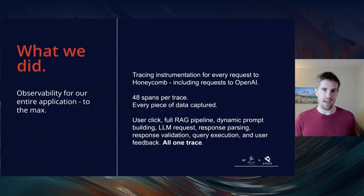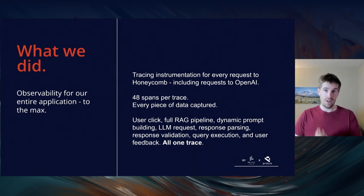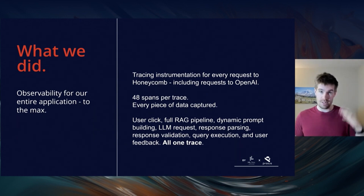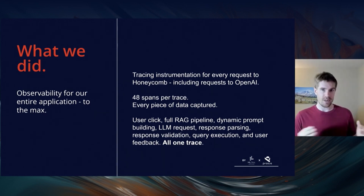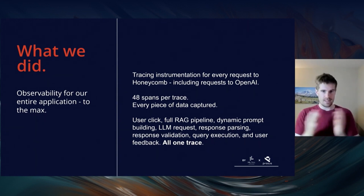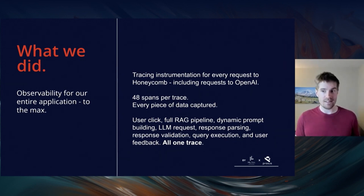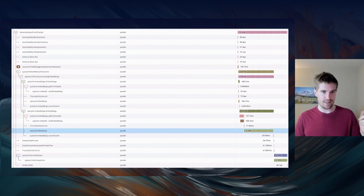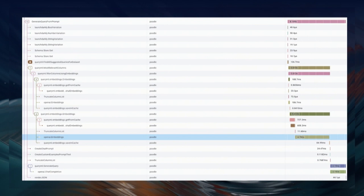We can view a trace. When I say we capture everything, we're using distributed tracing — because Honeycomb, OpenAI, and our querying engine are separate systems; this is technically a distributed system. The best way to understand distributed systems is to build a distributed trace. This trace is connected to our entire application so we can track the full user experience, not just the call to the LLM. The slice of that trace dealing with the LLM is 48 spans in length. The full RAG pipeline makes up the majority — I collapsed one section that's over 20 spans alone, representing all the decisions we make before we ever make a request to OpenAI.